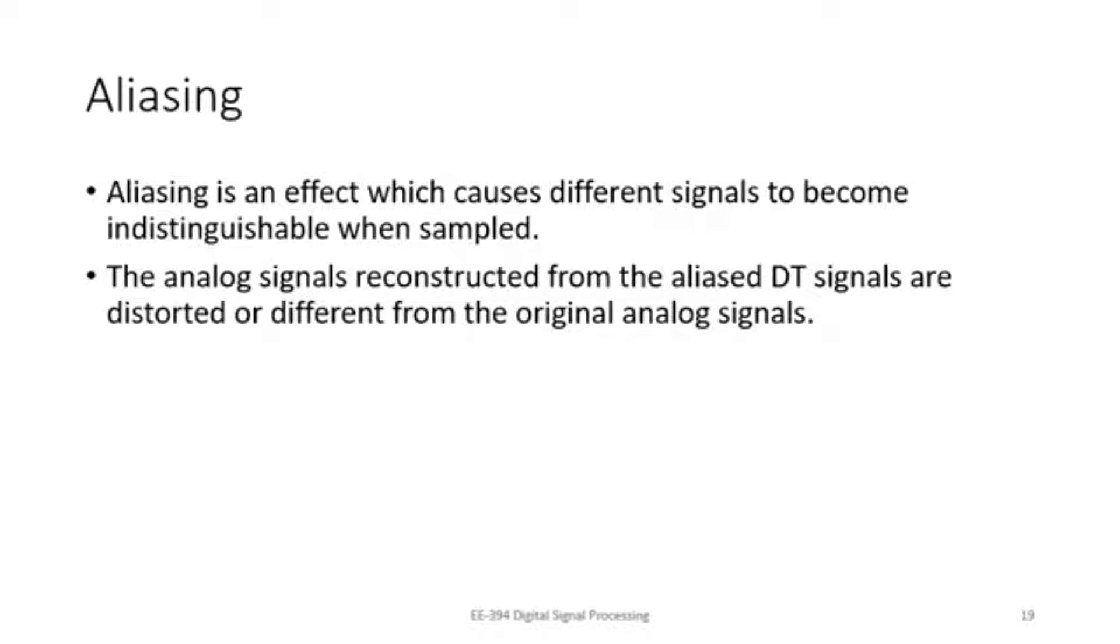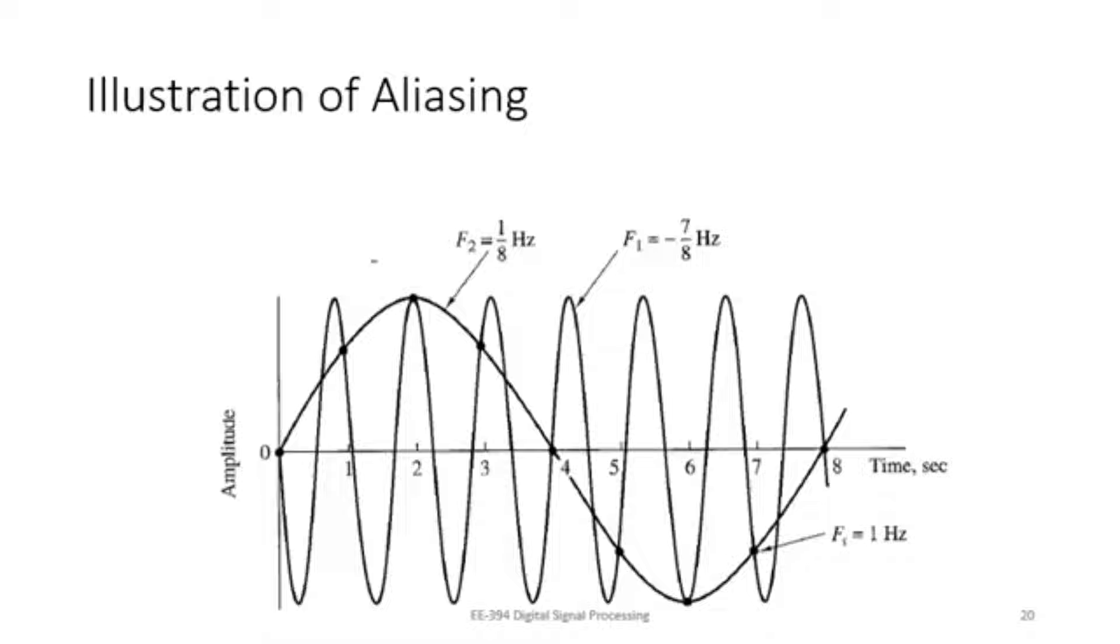The reason was that we have not followed the Nyquist criteria. This figure is from your book. It explains why the signals of two different frequencies happen to generate same numbers.